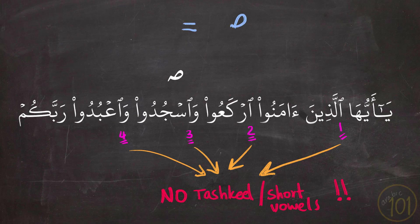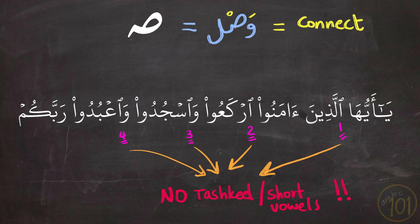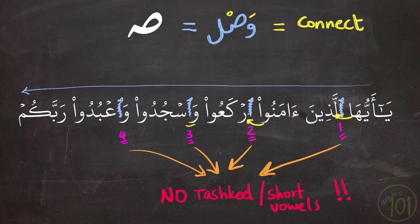That shouldn't be a problem because Hamzat Wasl has this sign — a small saad — which stands for the word 'wasl' and means 'connect.' This means that if I continue on reading, I won't have to pronounce Hamzat Wasl anyway. So I can simply read the ayah without needing to know any tashkeel or short vowels whatsoever.